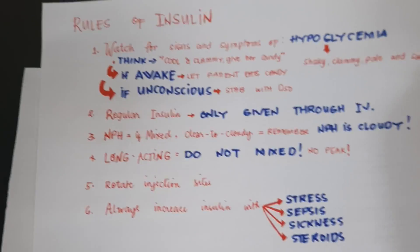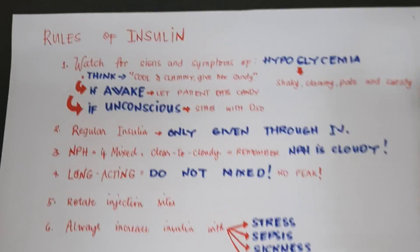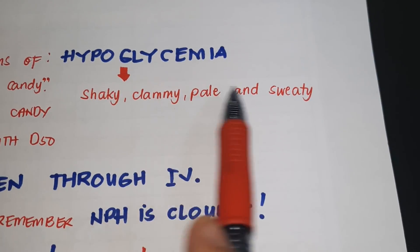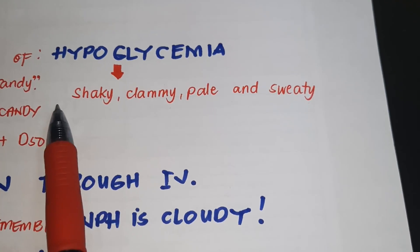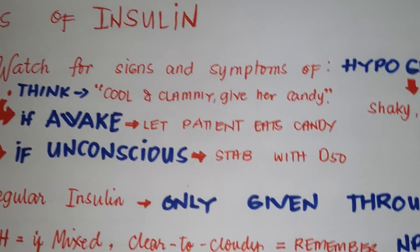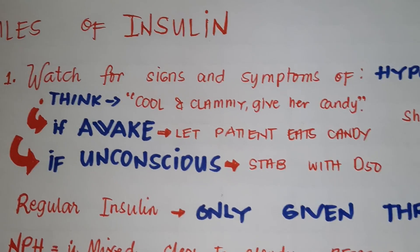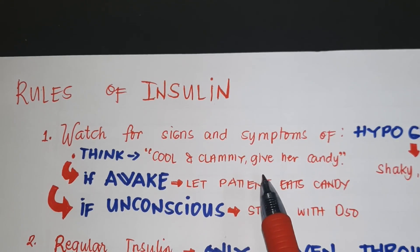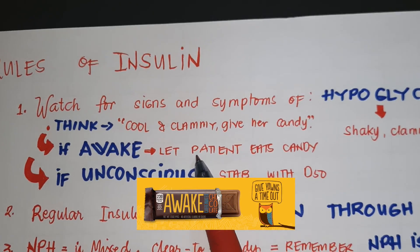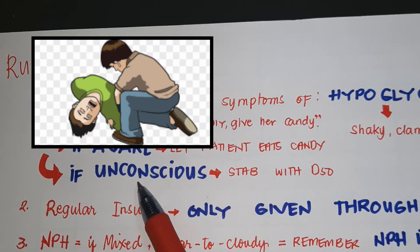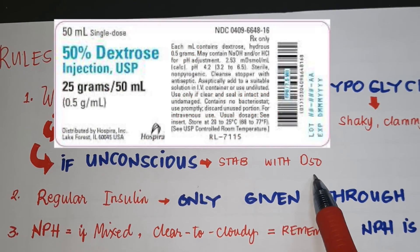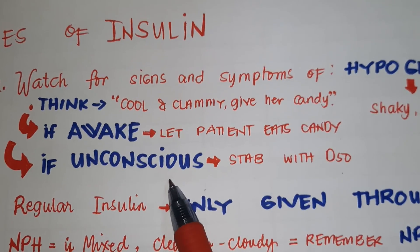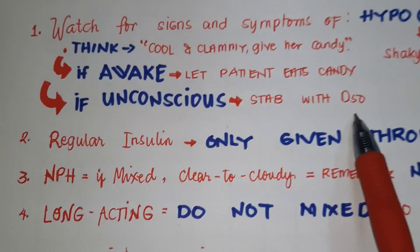What are the rules in insulin? Always watch for signs and symptoms of hypoglycemia: shaky, clammy, pale, and sweaty. For intervention, think 'cool and clammy, give her candy.' If the patient is awake, let them eat candy. If the patient is unconscious, check the glucose and give D50 as ordered.